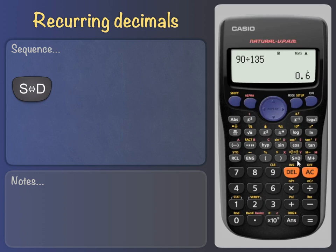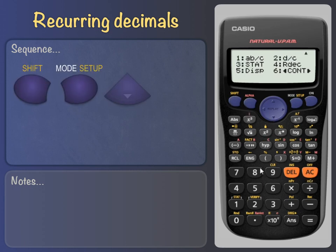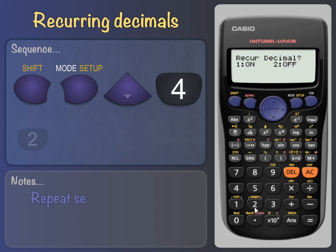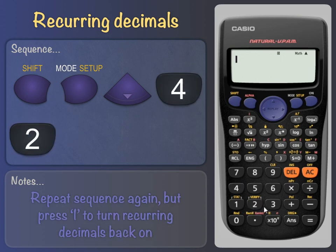Of course, we could just press the SD button again, but you might want to set up the calculator so it doesn't display recurring decimals. To do this, press Shift Setup Down 4, then 2 to turn recurring decimals off. To turn recurring decimals back on, just repeat the above sequence but press 1 rather than 2 at the end.